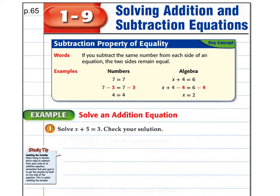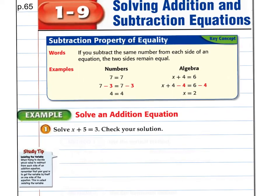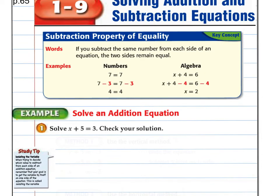Looking at 1-9, we are going to have some properties and things to add to our vocabulary. This is subtraction property of equality. What it means is exactly what it says. If you subtract the same number from each side of an equation, the two sides remain equal.